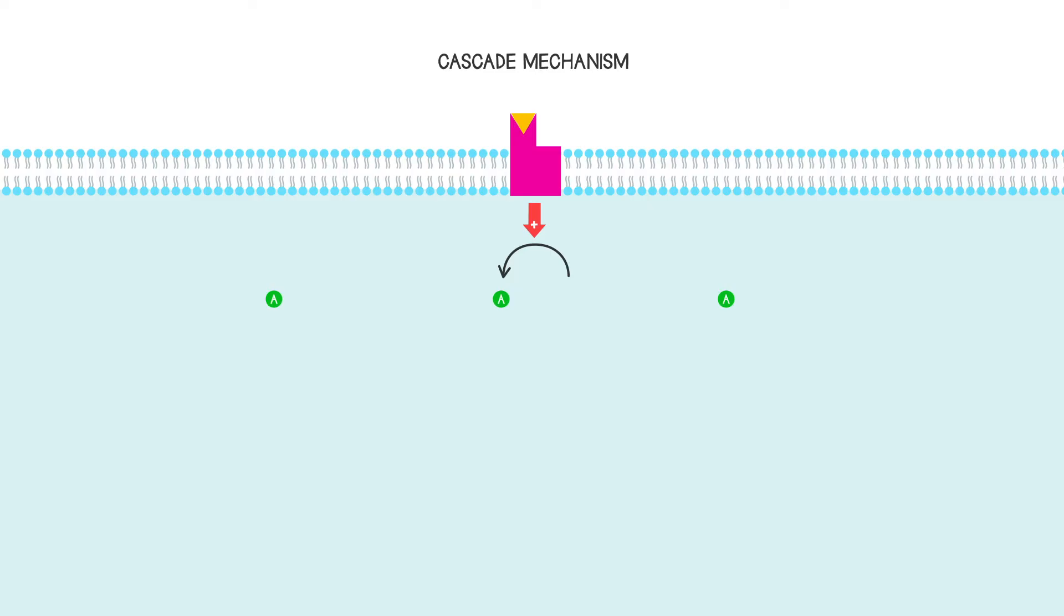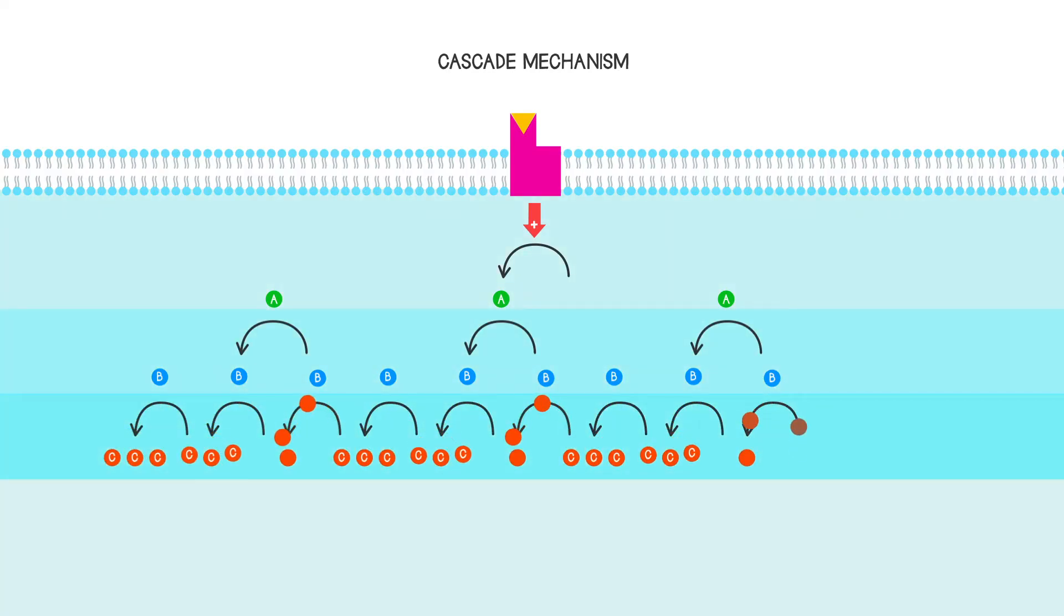Then each molecule A can go on to activate a number of molecules of a different type, which we'll call molecule B. Each of those will go on to activate another type of molecule, called molecule C. And so at each step, an increased number of messenger molecules become excited, become activated.